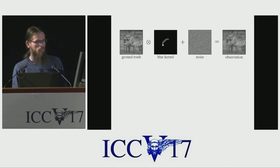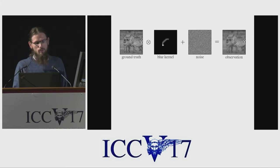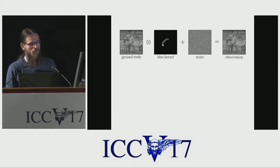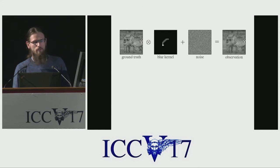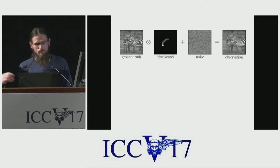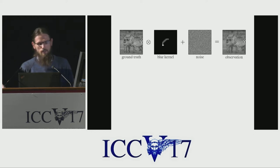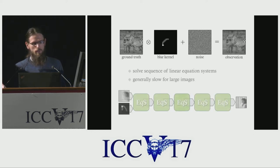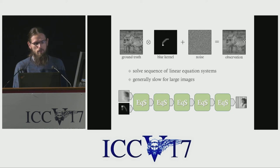We adopt the common blur model where an unobserved image arises from convolution of a sharp image with a single blur kernel plus non-pixel independent Gaussian noise. Reversing this process is called deconvolution, and in this work we assume that the blur kernel is known or estimated beforehand.